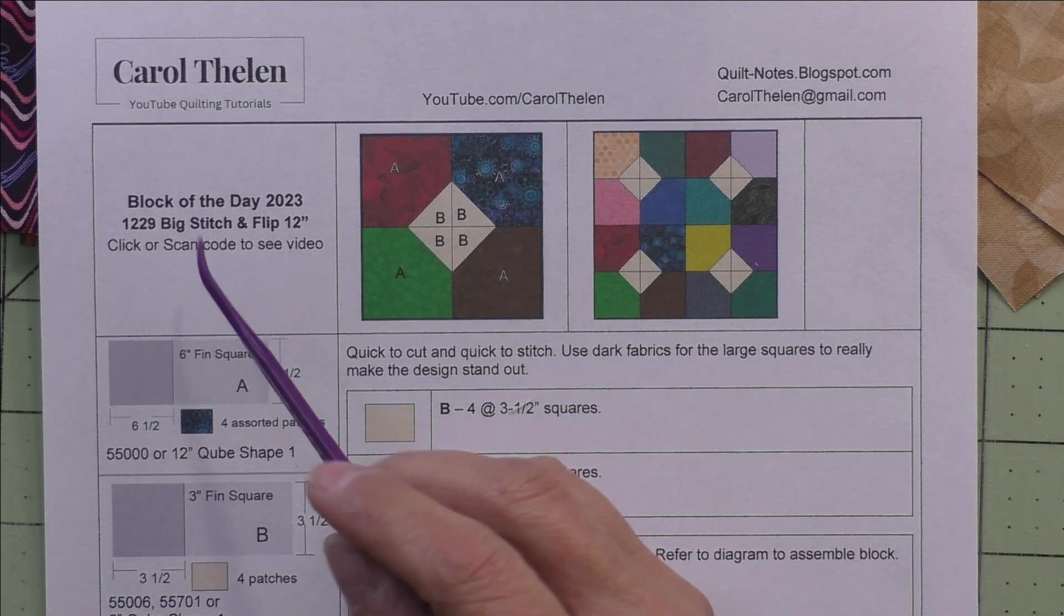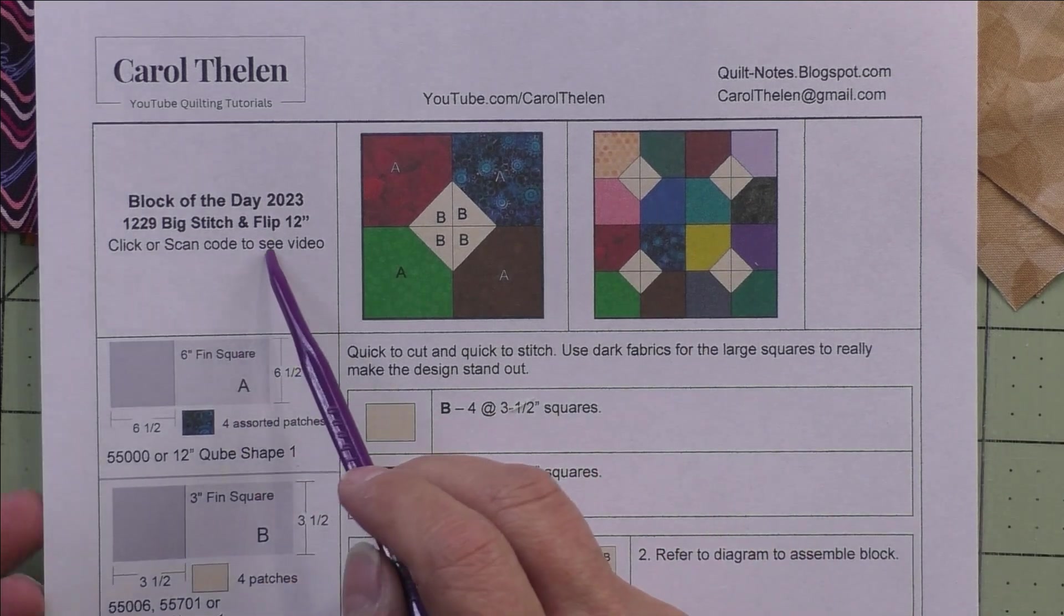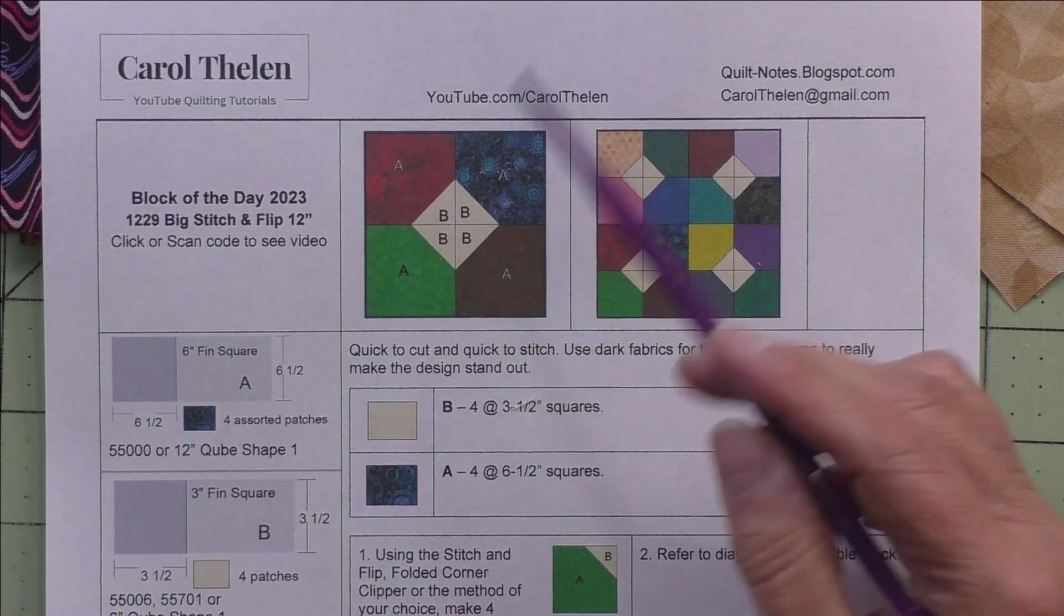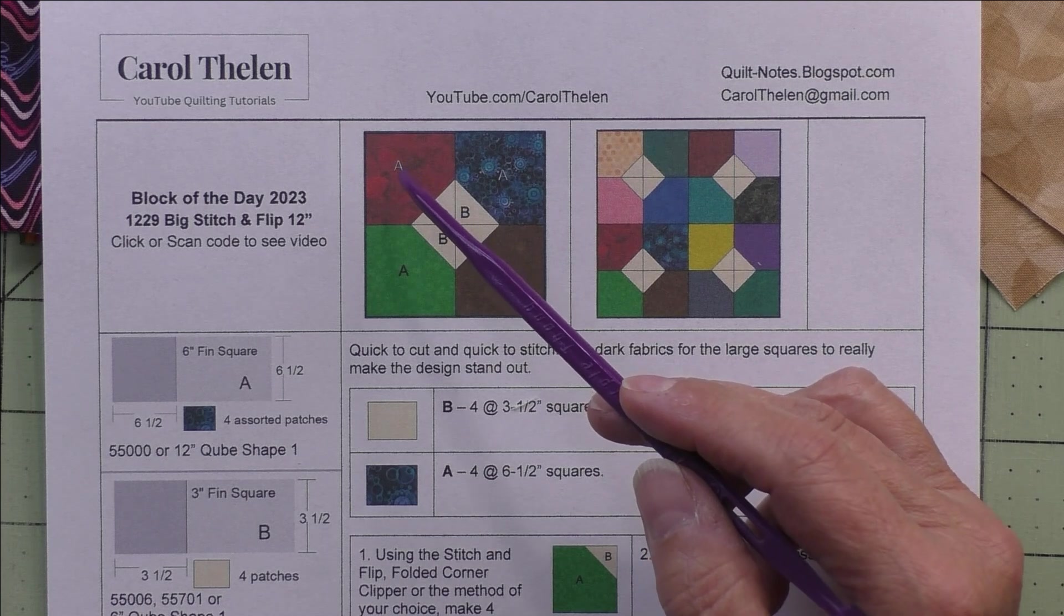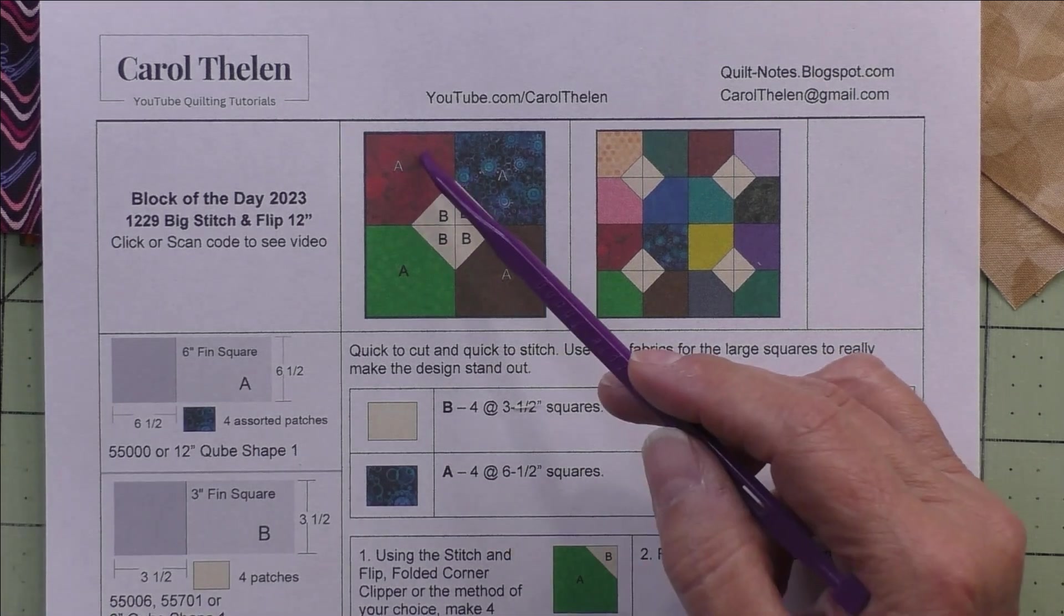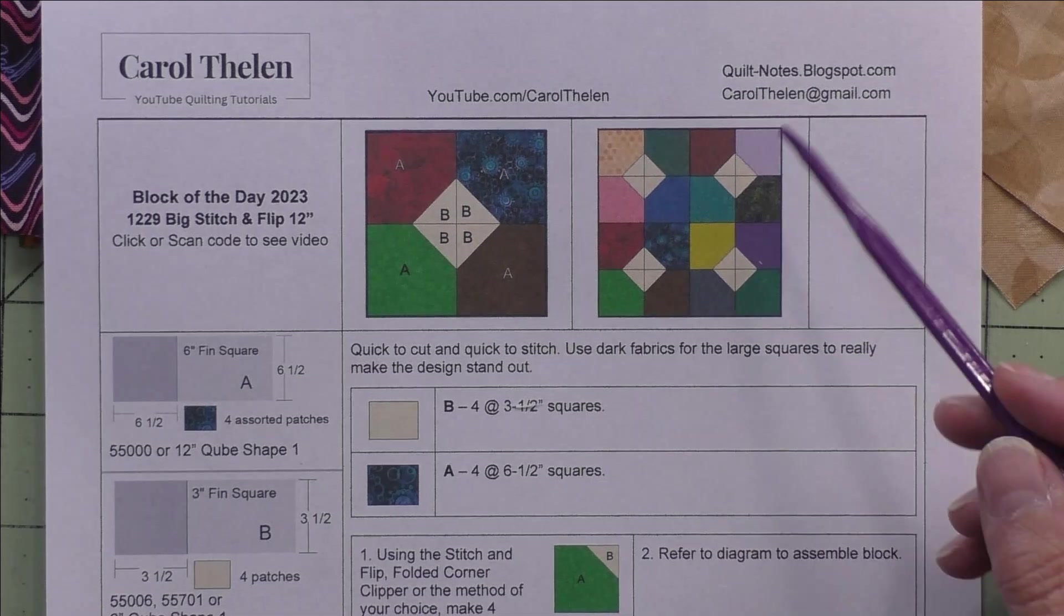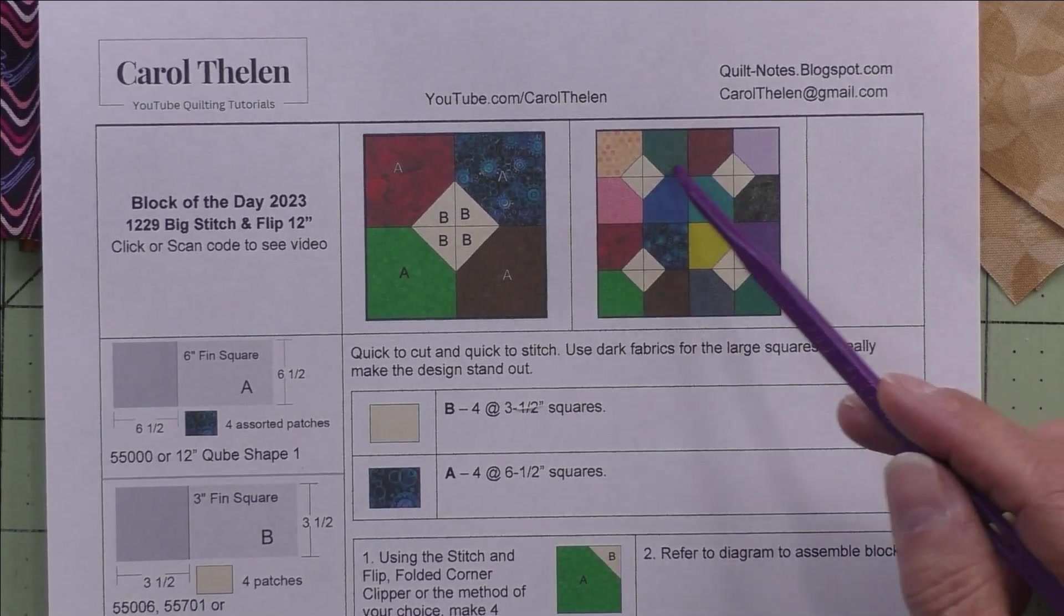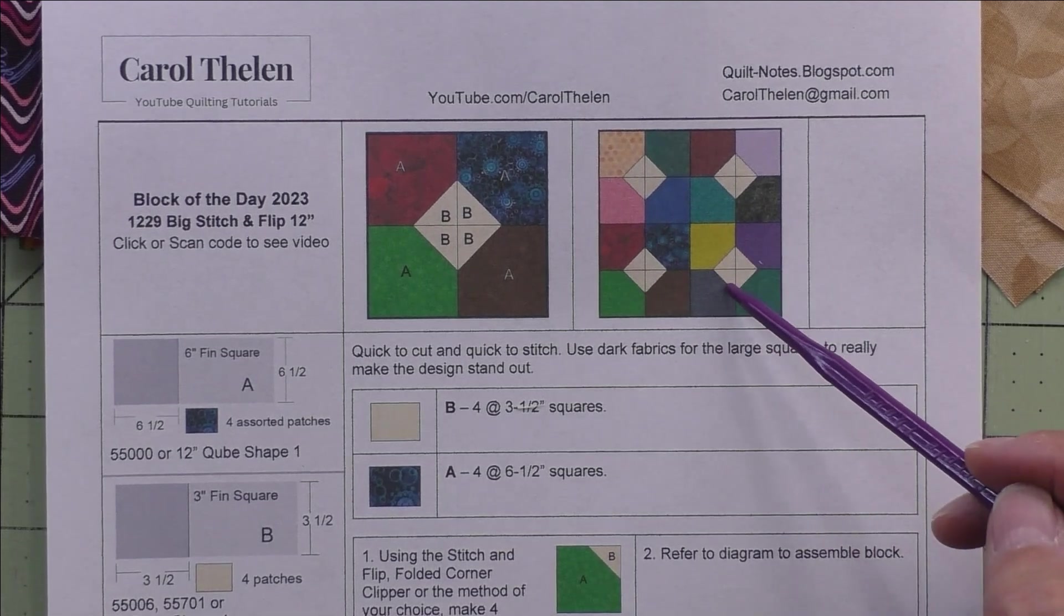This block is called Big Stitch and Flip and it finishes at 12 inches. Here's the diagram - we just have two sizes of squares: six and a half inches and three and a half inches cut. Here are four blocks set block to block; it kind of makes a little circular design here in the center.